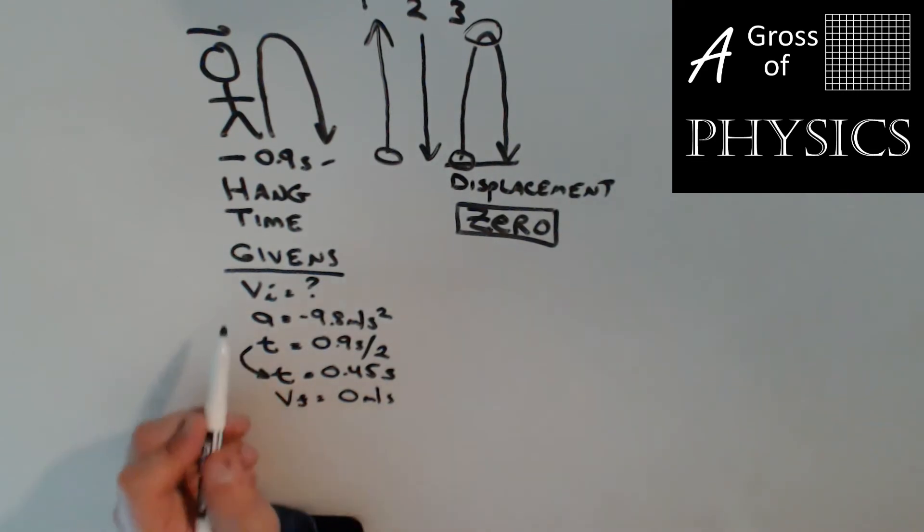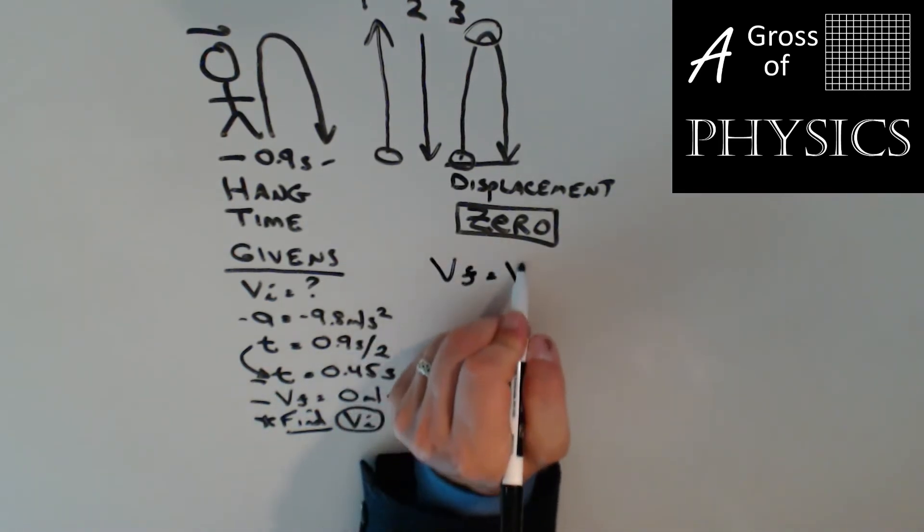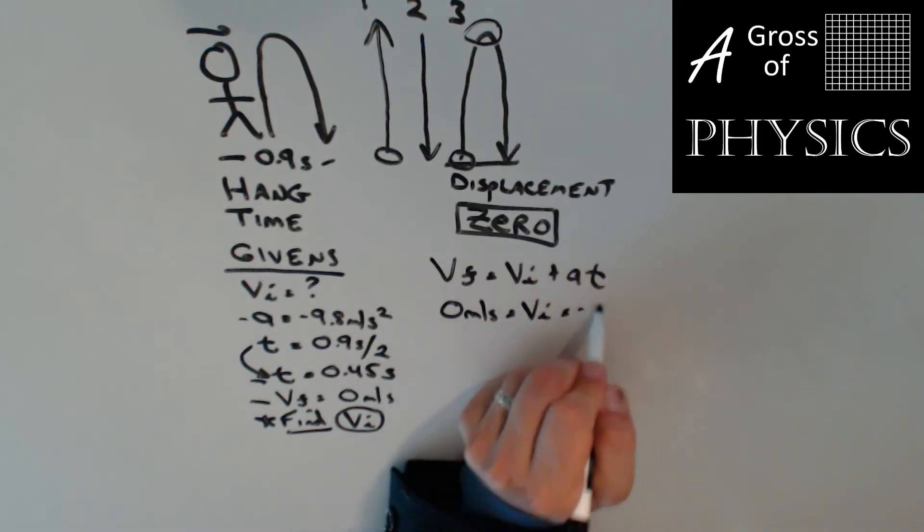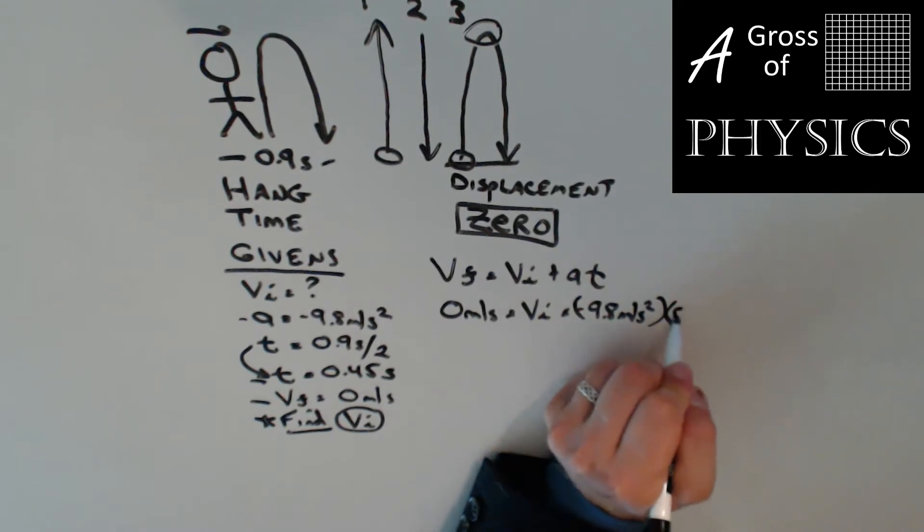So if we look at knowing A, T, and VF, and we're looking for VI, now I'm going to write find VI, but what I just showed you is an alternative way to write your find within the problem. Now looking at these variables, I'm thinking equation 3 would be appropriate. VF equals VI plus AT. VF is 0. VI is what we're looking for. Negative 9.8 meters per second squared. And T would be 0.45 seconds.